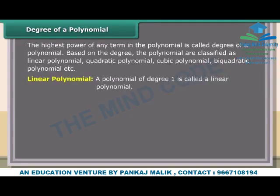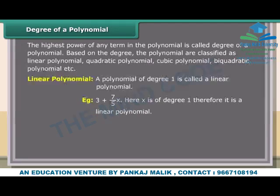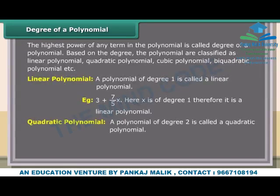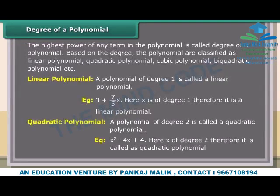Linear polynomial: A polynomial of degree 1 is called a linear polynomial. Example: 3 + (7/5)x — here x is of degree 1, therefore it is a linear polynomial. Quadratic polynomial: A polynomial of degree 2 is called a quadratic polynomial. Example: x² − 4x + 4 — here x is of degree 2, therefore it is a quadratic polynomial.